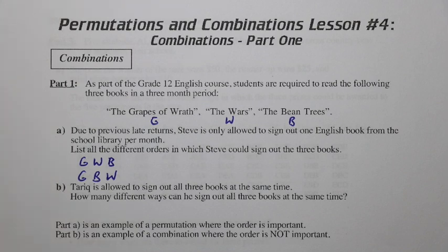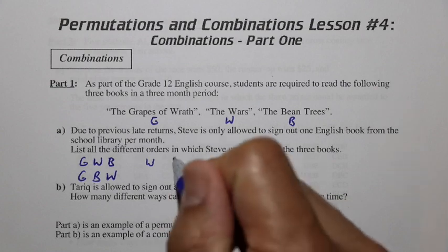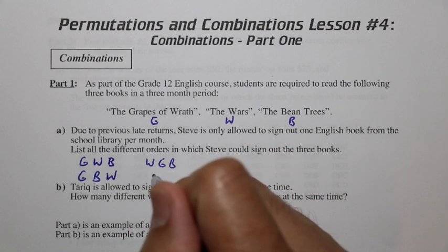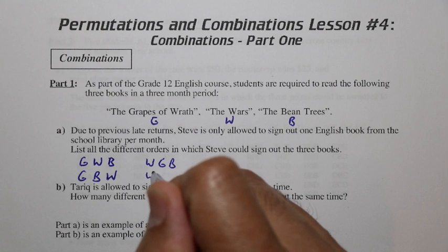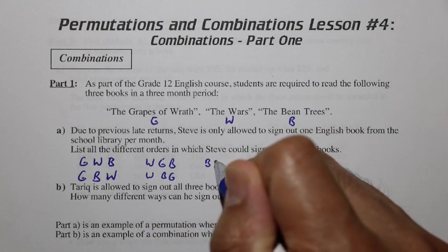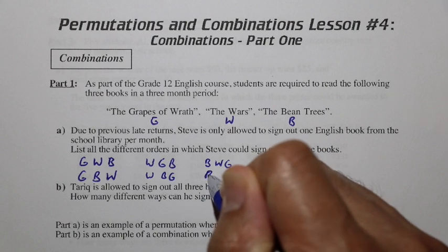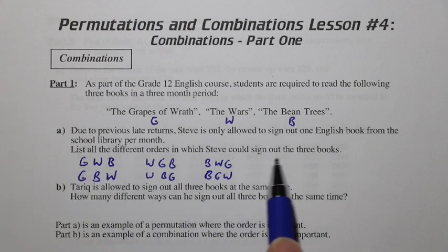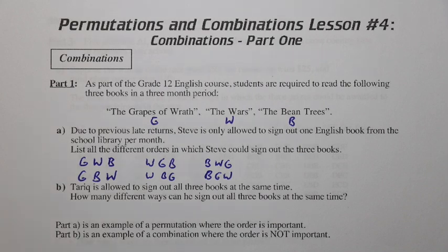In another parallel universe, Steve walks in and gets Wars first, then Grapes of Wrath, then Bean Trees — and we continue on with this. So we have six parallel universes, six different ways that this could happen, where Steve could sign out the three books and the order does matter. These are permutations.